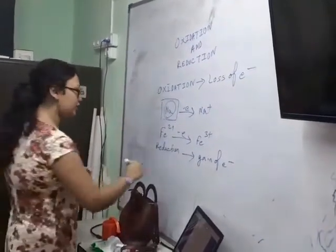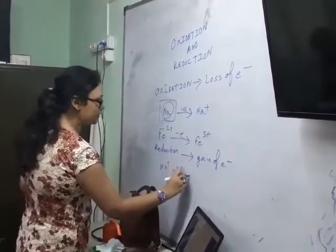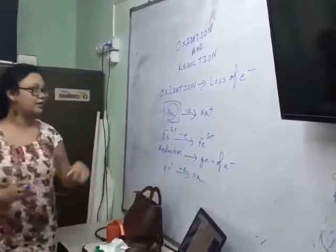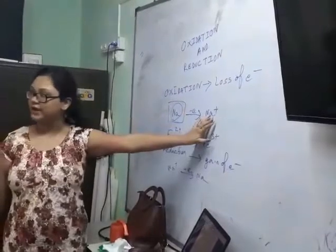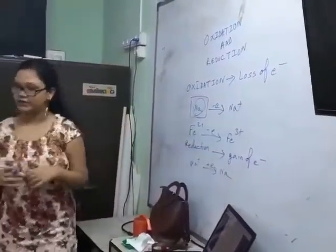That means if we have Na+ and when we gain one electron, that forms Na. So what's happening? The cation is formed when electrons are reduced.